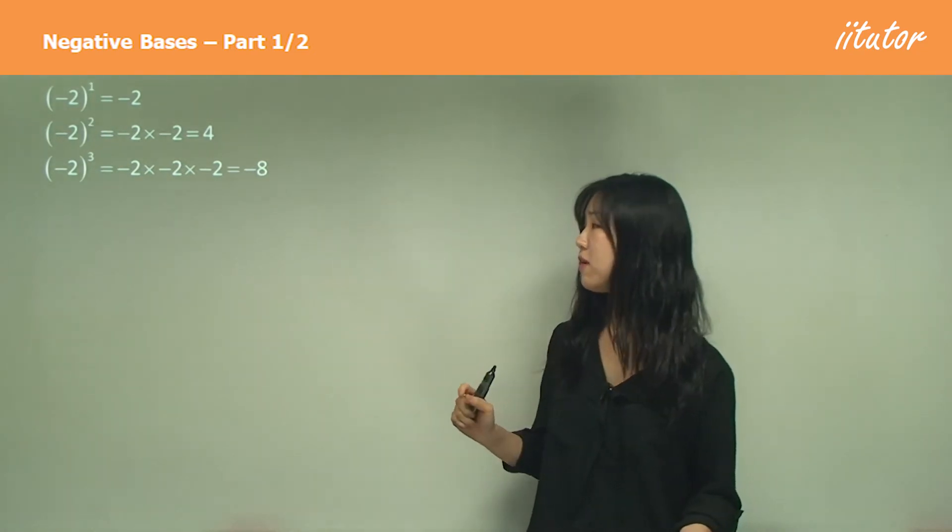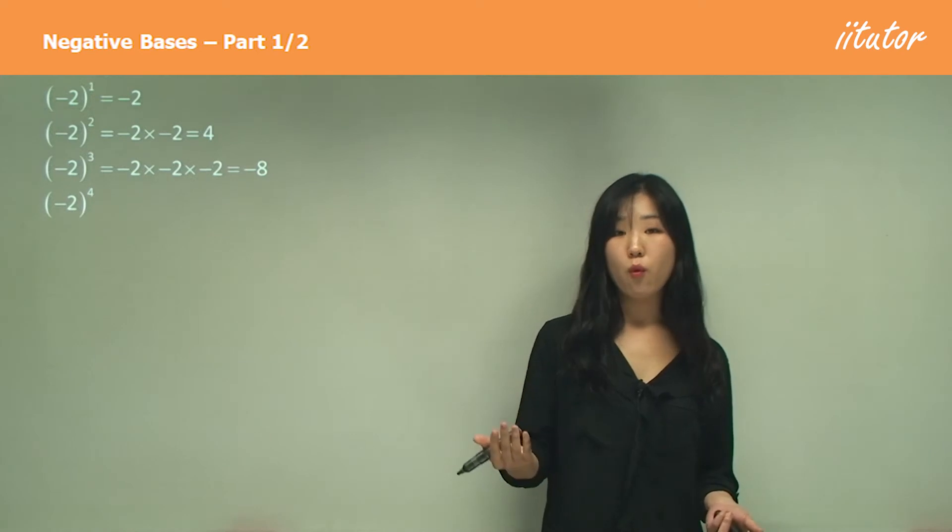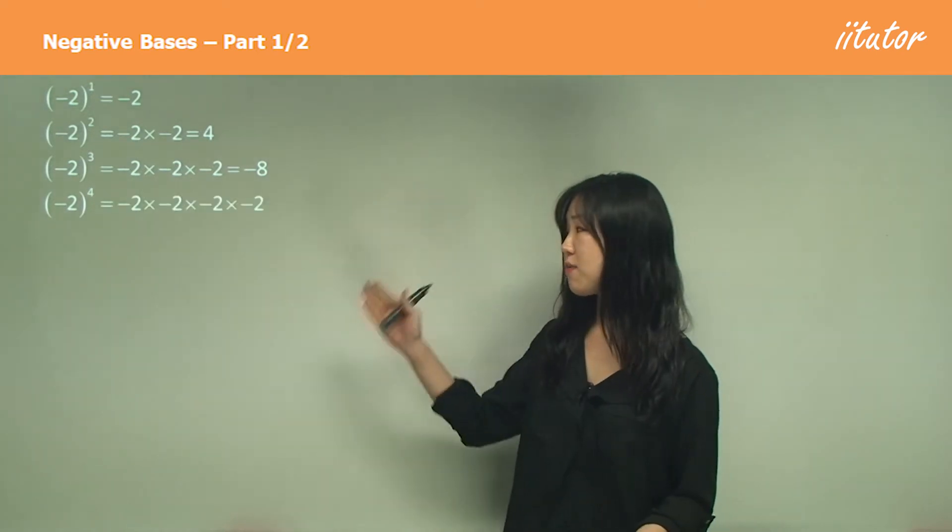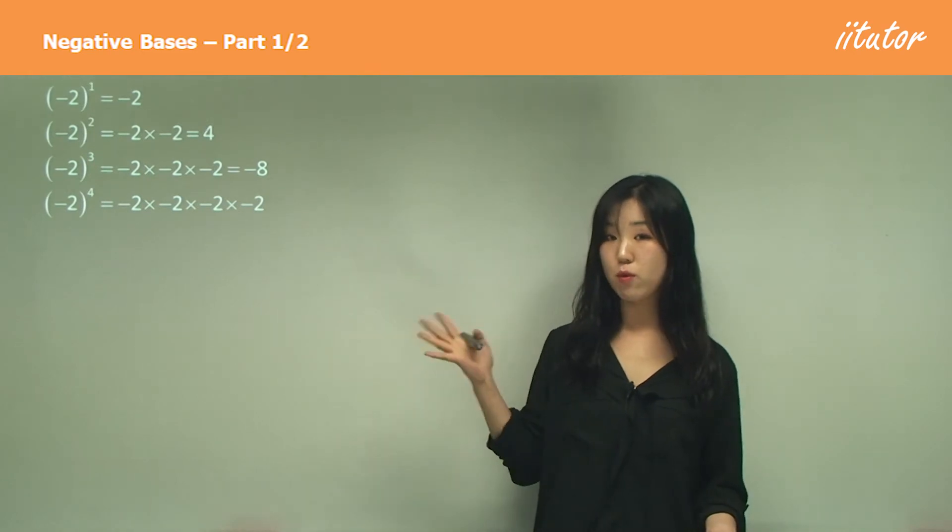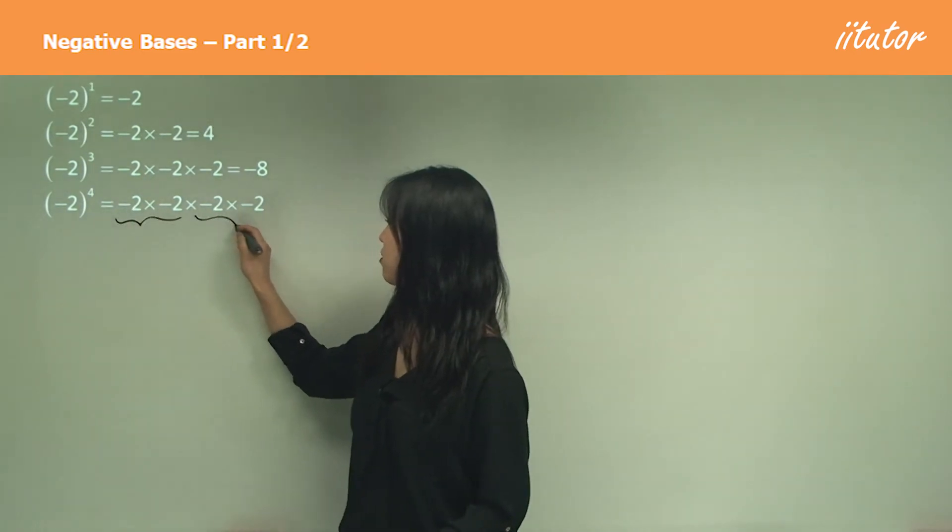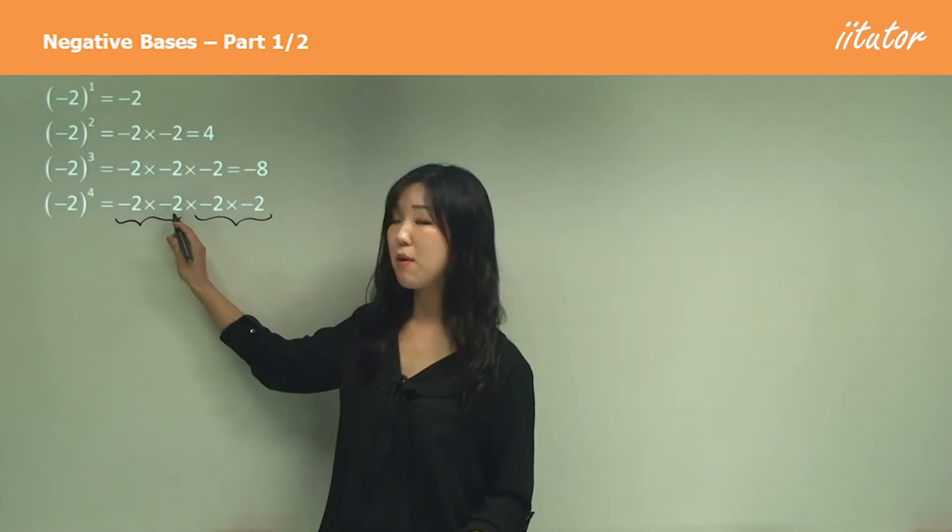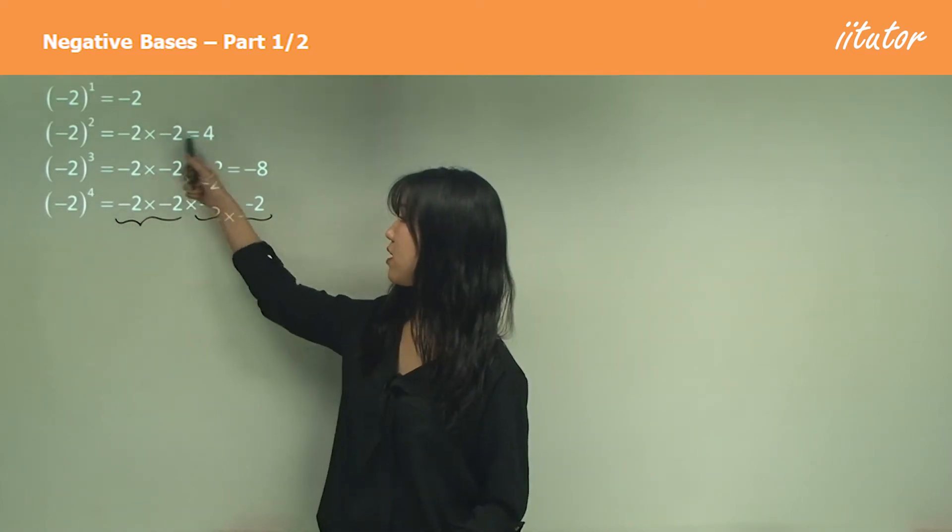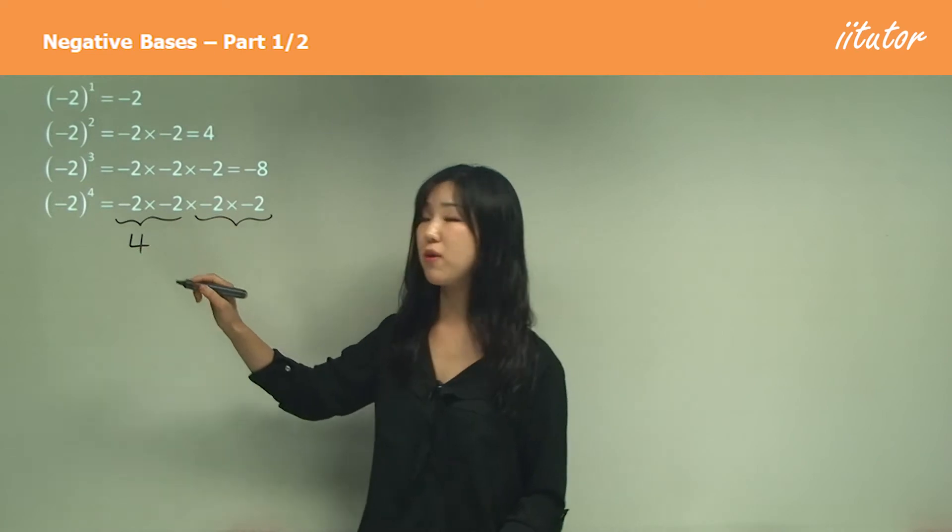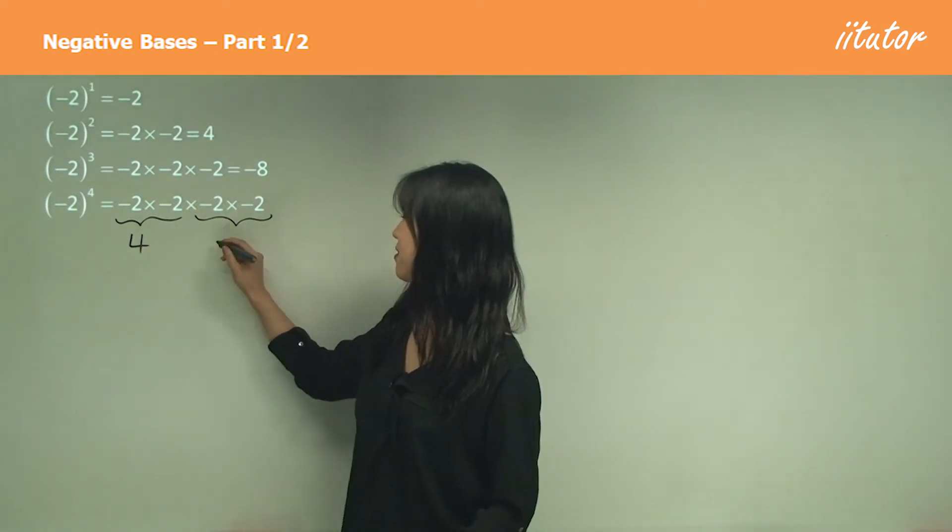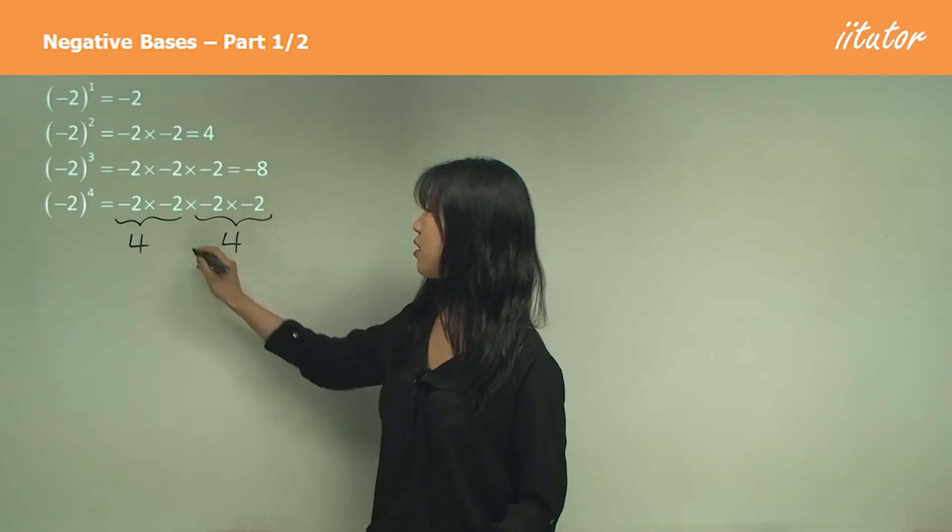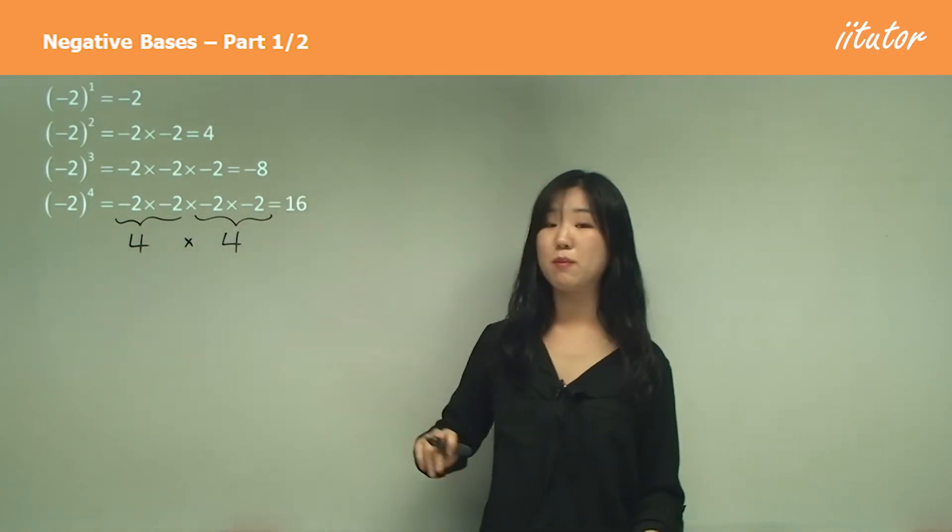So just do one thing at a time. What about negative 2 to the power of 4? That's the same as negative 2 times negative 2 times negative 2 times negative 2. I'll separate it into 2. Negative 2 times negative 2, we know that it's positive 4 because negative negative makes a positive. And same with here, it's positive 4. So 4 times 4 must be positive 16.